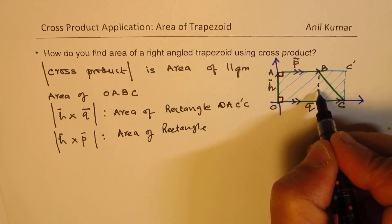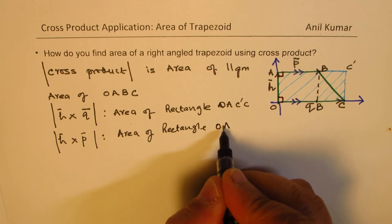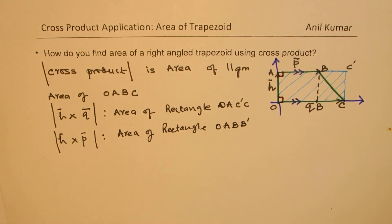Let me call this point here as B dash. So, it is O, A, B, B dash. So, let us shade it into a different color.